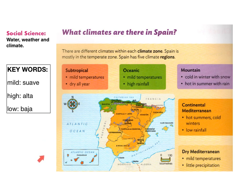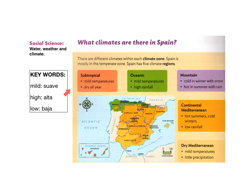Have a look at the map. Where can we locate the subtropical? It's not in the peninsula — the subtropical climate is found in the Canary Islands. The temperatures are mild and it's dry all year. Some keywords to remember: mild means suave, high means alta, and low means baja.